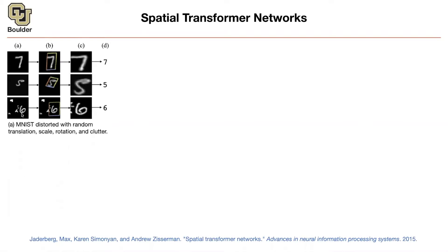We look at a six and see that not only is it translated, it is scaled, it's rotated, and it's cluttered with some random stuff. But our mind knows how to get rid of the clutter, focus on the number six, and say this image is representing a six.